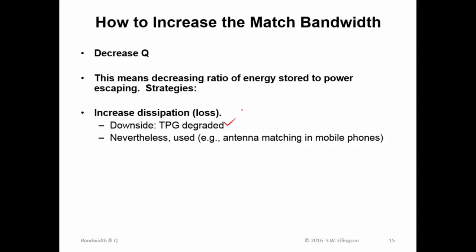Sometimes it's so hard to get the bandwidth that you need from an impedance match that you have no choice but to do this. And I'll tell you a very important class of examples where this happens is trying to impedance match antennas to transceivers in handheld phones.